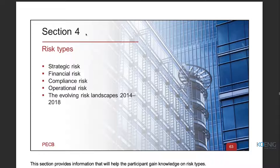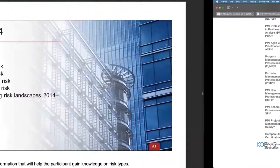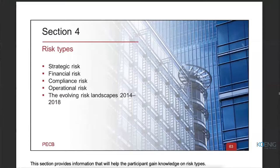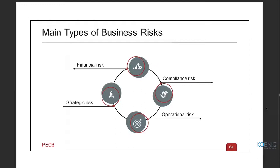We're at section four, about halfway through — roughly 65 slides total. The second half should be relatively quicker compared to the first one. Section number four covers risk types, where they're going to take us through the four main types of business risks.